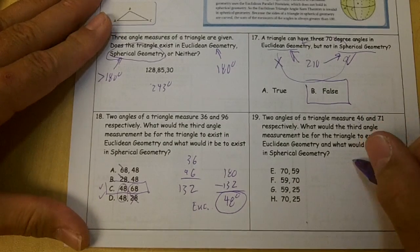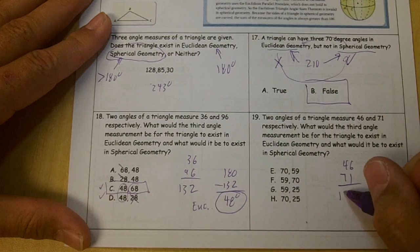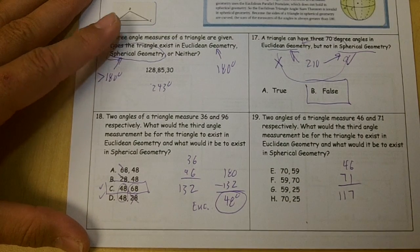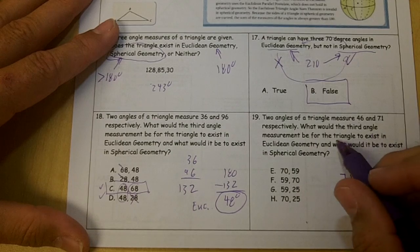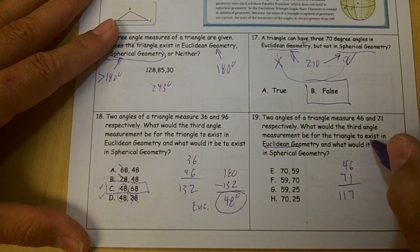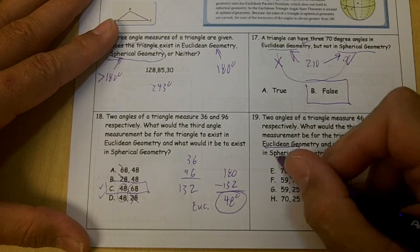Two angles measure 46 and 71. If you add those up, you get 117. Okay, right. What would the third angle measurement need to be for Euclidean and for the third to exist in Euclidean? And to exist in spherical.